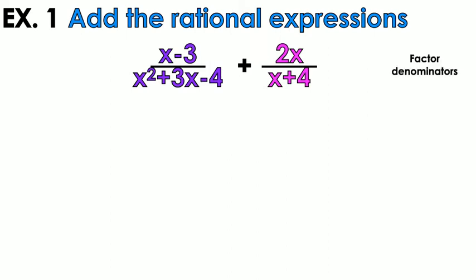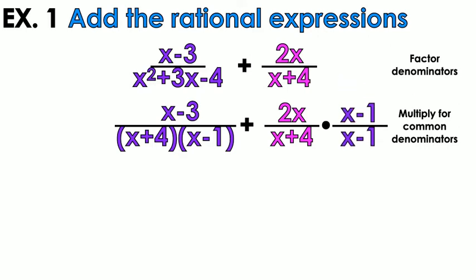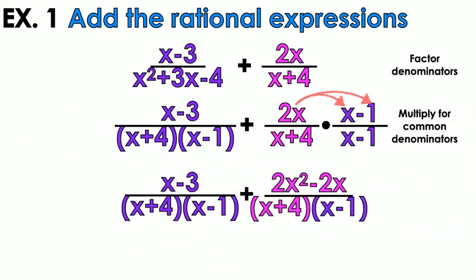Example number one — factor the denominators. The purple one factors to x squared plus 3x minus 4, which gives us (x plus 4)(x minus 1), and the pink side has x plus 4 in the denominator. The pink side is missing an x minus 1, so whatever it's missing, we multiply by that — multiply the top and bottom of the pink side by x minus 1.